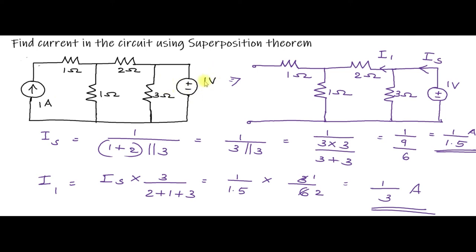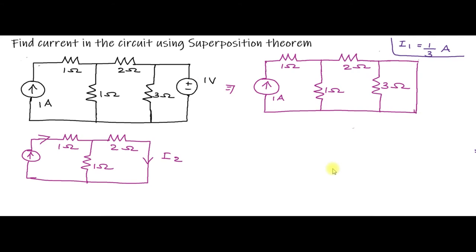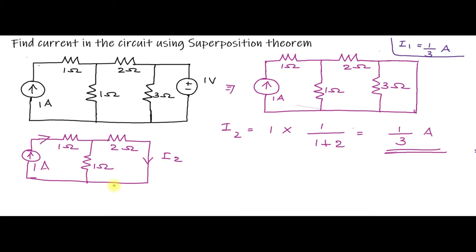Now deactivate the voltage source to determine i2. With the voltage source short-circuited, the 3 ohm becomes short-circuited. The circuit is redrawn with the 1 ampere current source only. Applying the current division rule: i2 = 1 × (1 ohm) / (1 + 2) = 1/3 ampere. So i2 = 1/3 ampere.